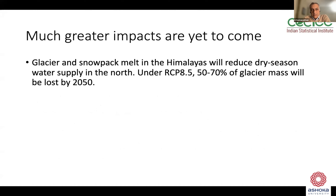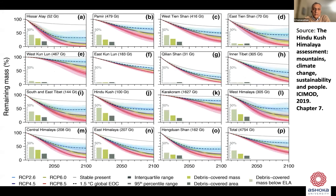So far I've been talking about impacts already observed, but much greater impacts are yet to come because the temperature is going to continue to go up. One major concern for India is glacier and snowpack melt in the Himalayas, which will reduce dry-season water supply in the north. Under RCP 8.5, one of the IPCC scenarios, it's been estimated that 50 to 70% of glacier mass might be lost by 2050.